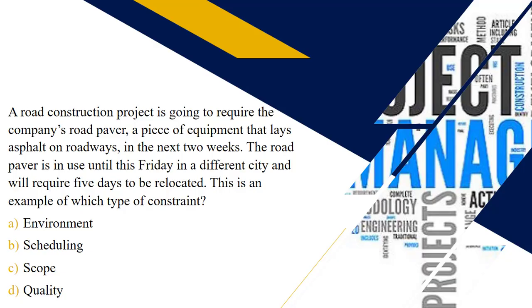A road construction project is going to require the use of the company's road paver — a piece of equipment that lays asphalt on roads. The requirement is needed in the next two weeks, but the road paver is in use until this Friday in a different city and will require five days to be relocated. This is an example of a scheduling constraint, because similar to the availability of people with certain skills, equipment availability and scheduling can also lead to a constraint on a project.